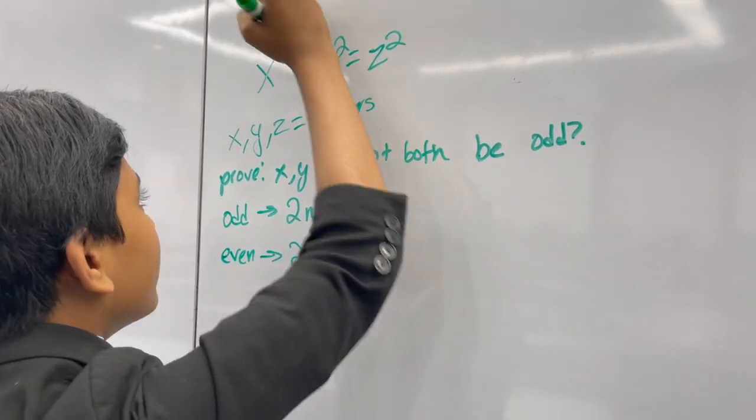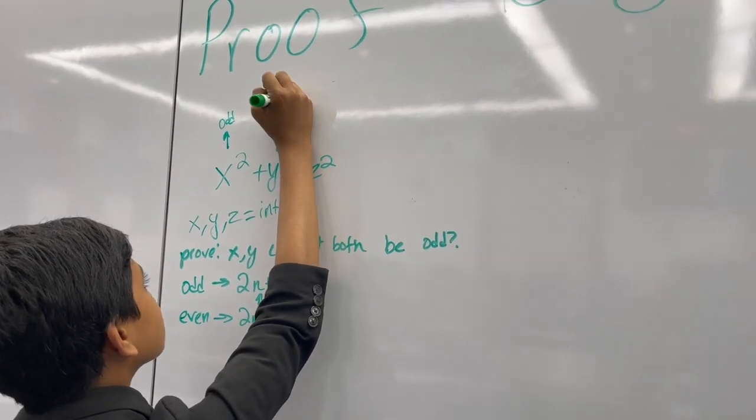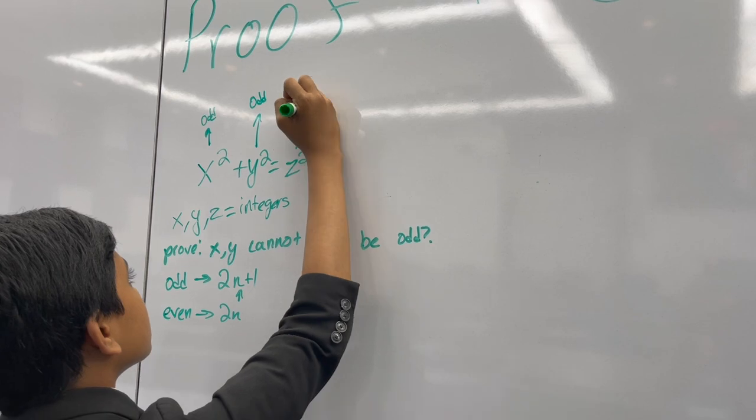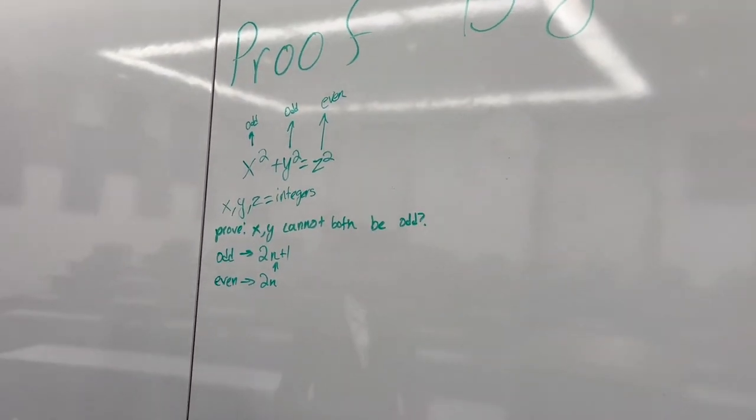Now, if x is odd, x squared must be odd. If y is odd, y squared has to be odd. So z squared has to be even, so z has to be even.